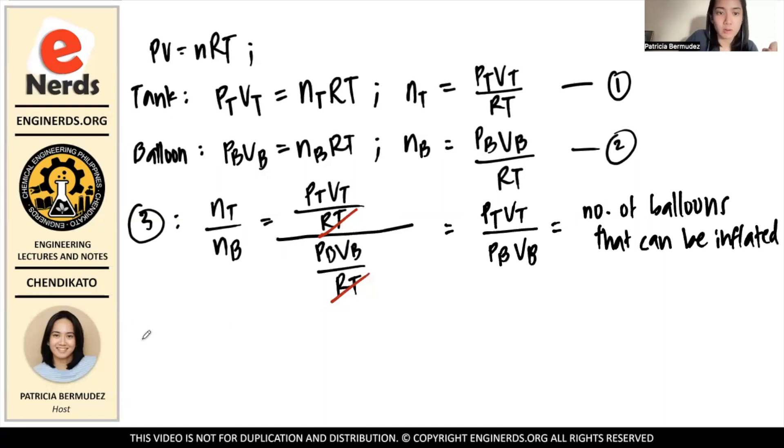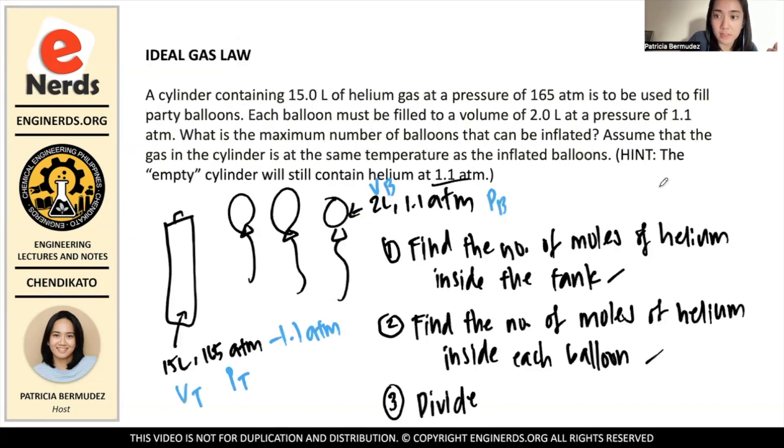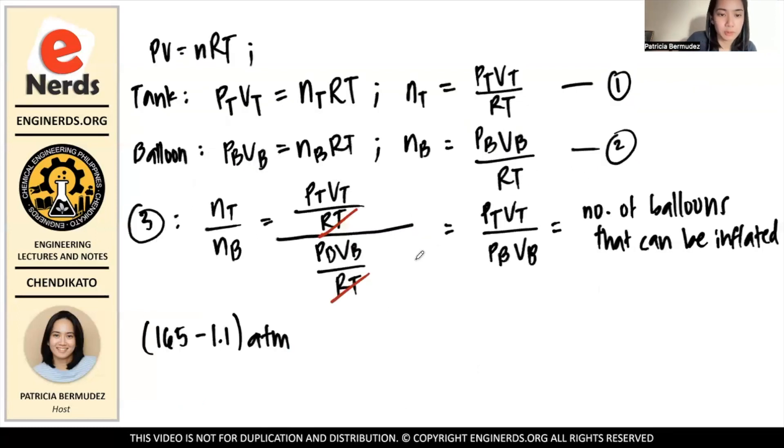So, what we do now is we just substitute. We know that PT is equals to 165 minus 1.1. And then, this one is in ATM. You have to remember to minus. Because this hint is there for a reason. Even when the cylinder is empty, all the helium has gone to the balloons, there will still be a pressure in the tank itself. And we have to account for that pressure when we're calculating here. Because that pressure will not go to the balloon. It will still remain in the tank. And then, the volume, which is 15 liters over the PB, the pressure of each individual balloon is 1.1 ATM. And then, the volume of each balloon is 2 liters.